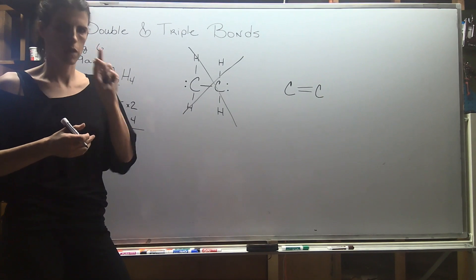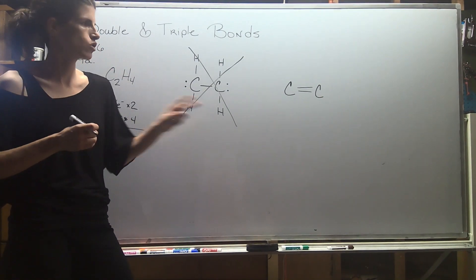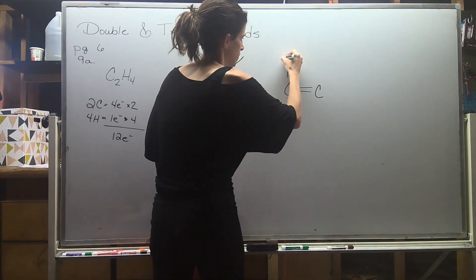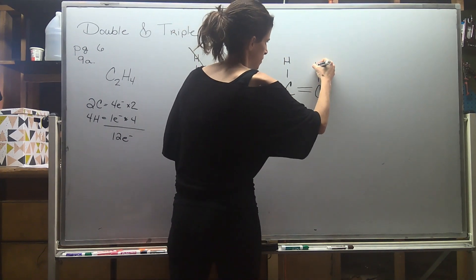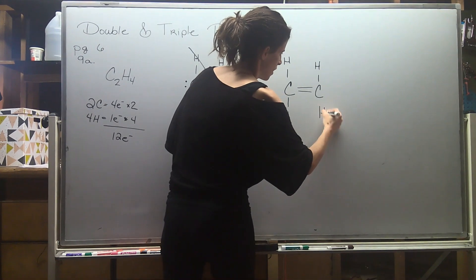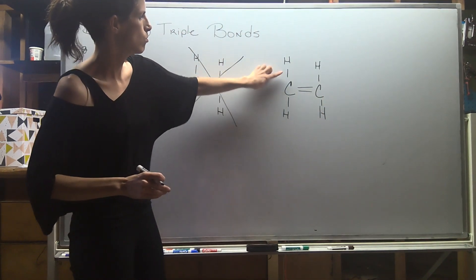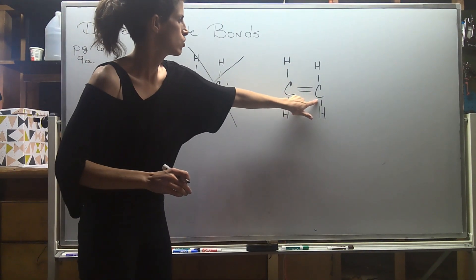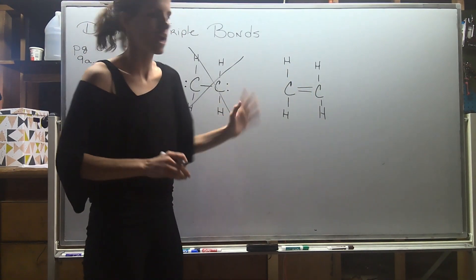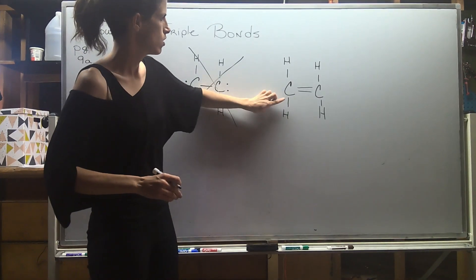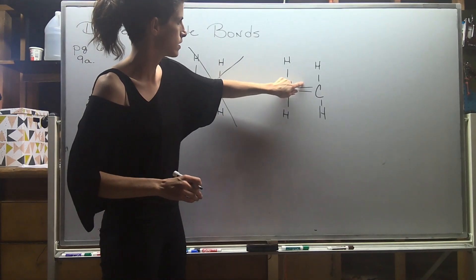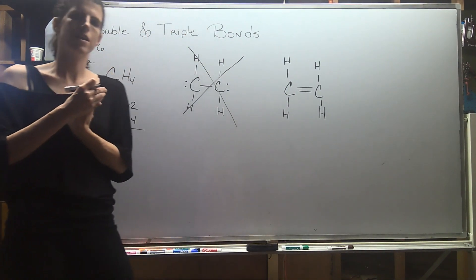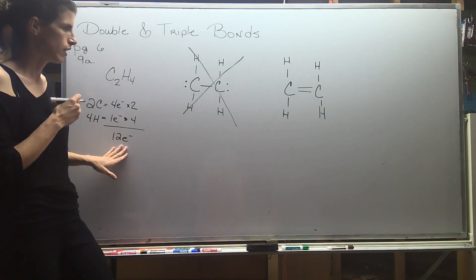Hydrogen can only make one single bond — that's it, hydrogen is very boring. I'll attach those hydrogens again. Now checking the octets: two, four, six, eight — carbon's good. The other carbon: two, four, six, eight — also good. Checking the total: two, four, six, eight, ten, twelve. We have a valid structure because we satisfied the octets and used exactly 12 electrons.